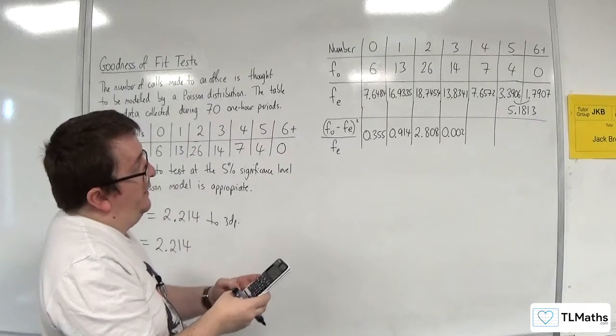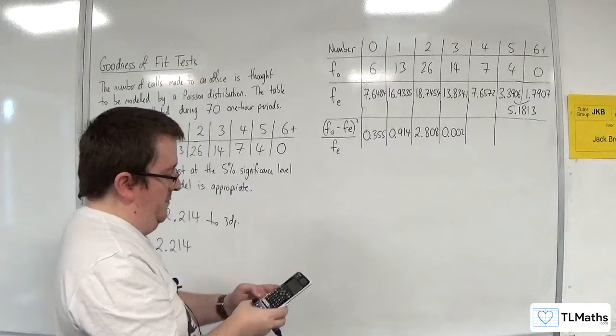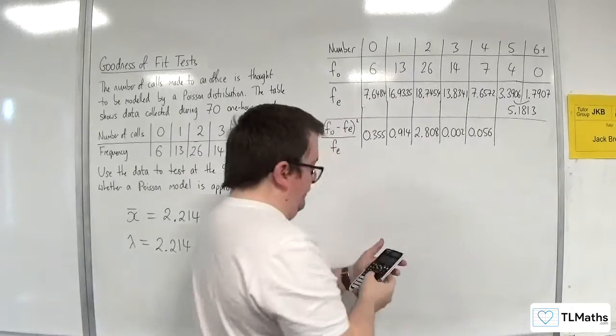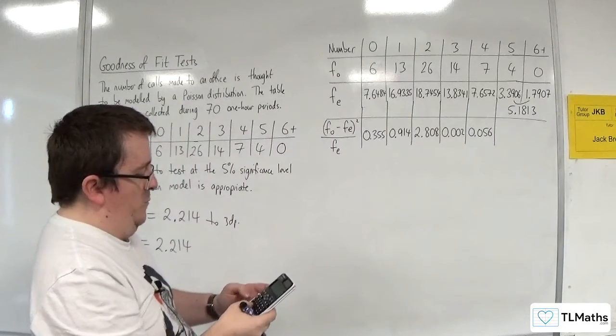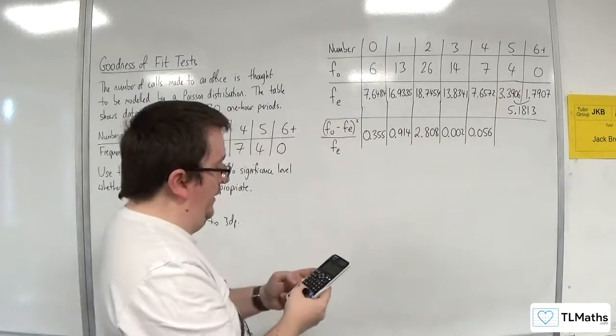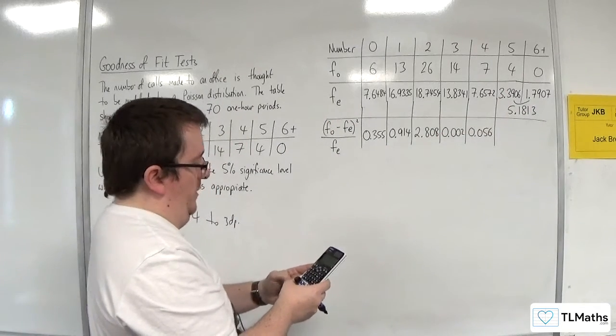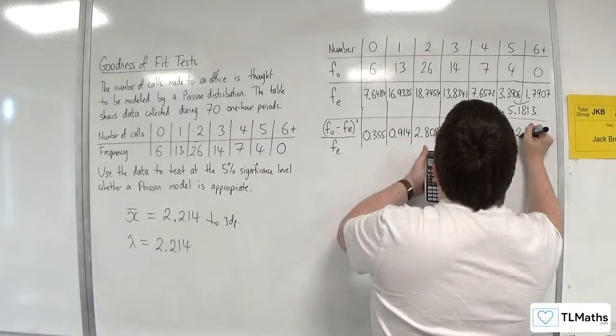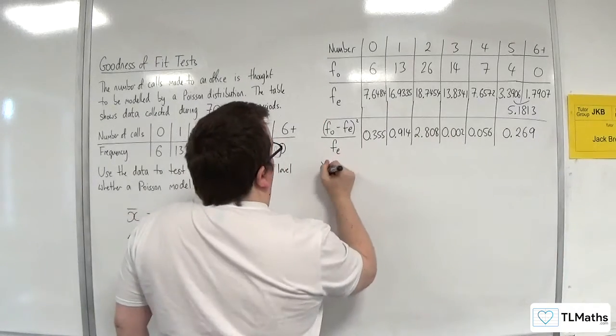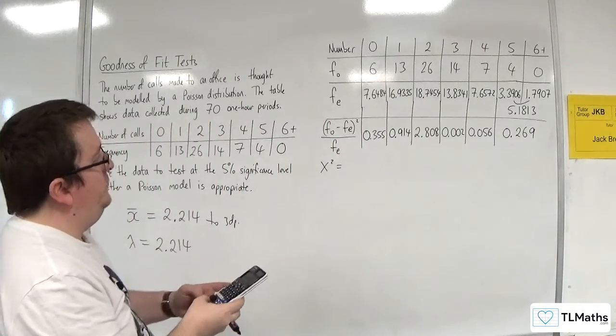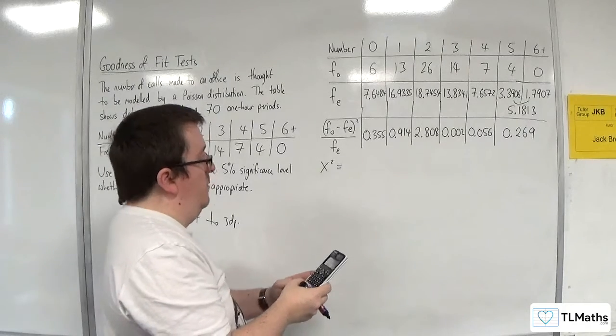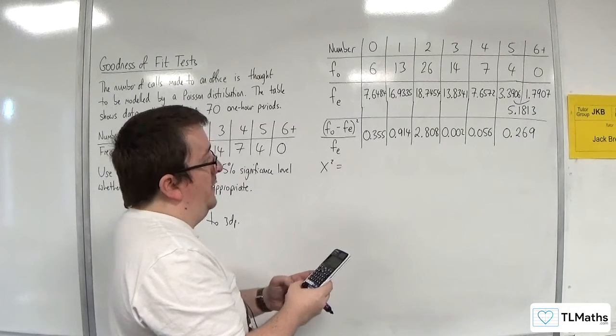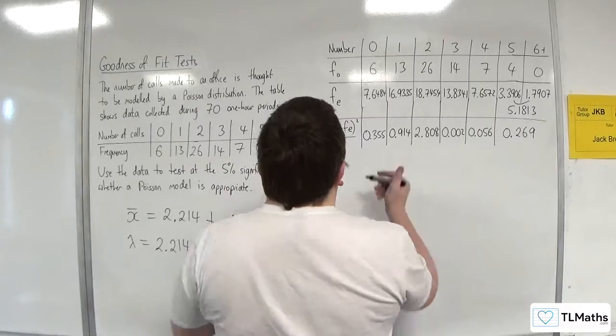Then, 7 take away 7.6572 squared, divided by 7.6572 gives 0.056. And 4 take away 5.1813 squared, divided by 5.1813 gives 0.269. So the chi-squared value: 0.355 plus 0.914 plus 2.808 plus 0.002 plus 0.056 plus 0.269, and we're getting 4.404.